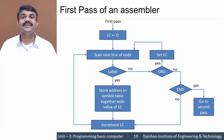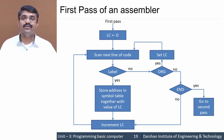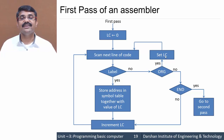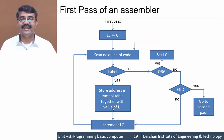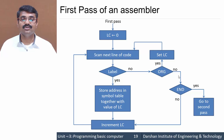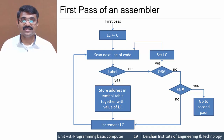To briefly recap the flowchart: we initialize the location counter to zero, scan the next line of code, and check if it is a label. If not, we check for ORG — if yes, we set the LC to the address in ORG and scan again. If it is a label, we store the address in the symbol table along with the LC and increment LC. If it is not ORG, we check for END; if not END, we increment LC and continue, and if END, we go to the second pass.